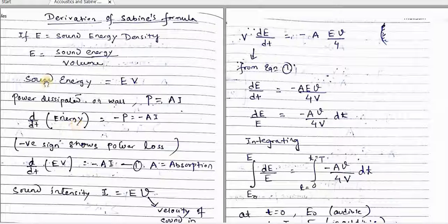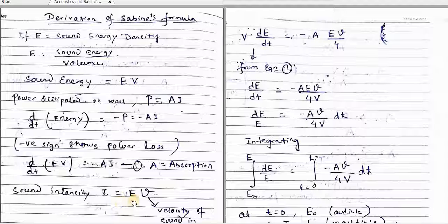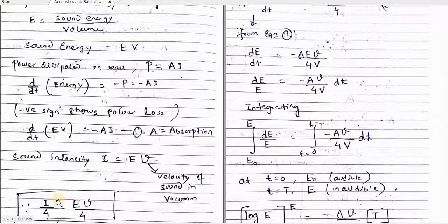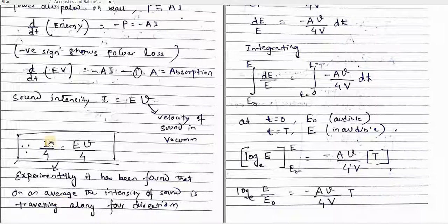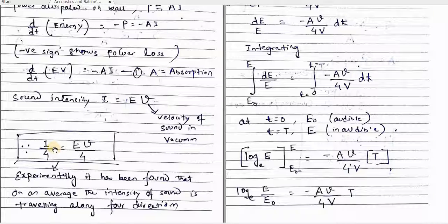So sound energy equals E times V. The rate of change of E times V equals minus A times I. Now, sound intensity can also be expressed as I equals E times V (velocity of sound). It has been found experimentally that the sound is not uniformly emitted in all directions; on average, one-fourth of the total intensity of the sound travels in each direction. So I divided by 4 equals E times V. We will use this expression in our derivation.